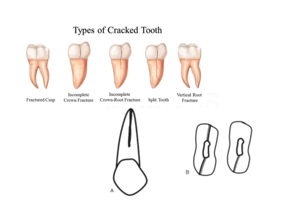Fractures or cracks of the teeth can be classified into five types. The first is a fractured cusp, second is an incomplete crown fracture, third is an incomplete crown-root fracture, fourth is a split tooth, and the fifth is a vertical root fracture. There is also one more type called craze lines.